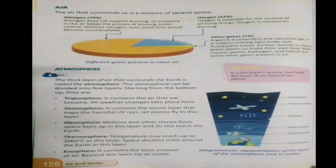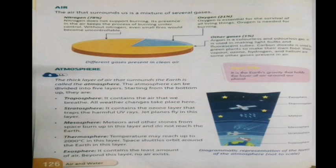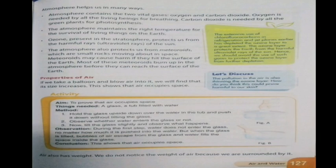The mesosphere is where meteorites and other stones from space burn up and do not reach the earth. The thermosphere can reach temperatures up to 2000 degrees Celsius, and space shuttles orbit the earth in this layer. The last layer is the exosphere — it contains the least amount of air, and beyond this layer no air exists.